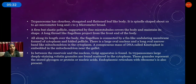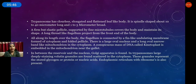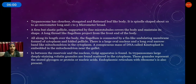The flagellum is present along the whole body from the anterior end to the posterior end. Along its length over the body the flagellum is connected by a fin-like undulating membrane formed of cytoplasm and folded pellicle. There is a large oval nucleus and a long oval narrow band-like mitochondria in the cytoplasm.